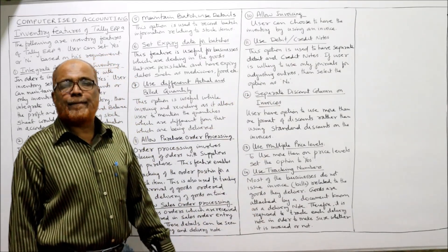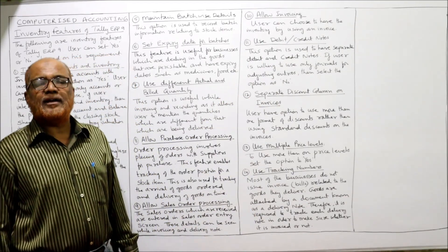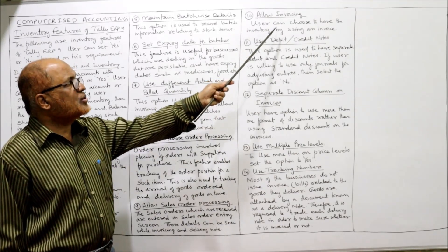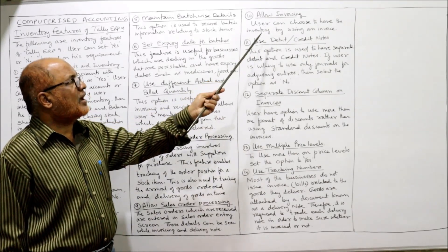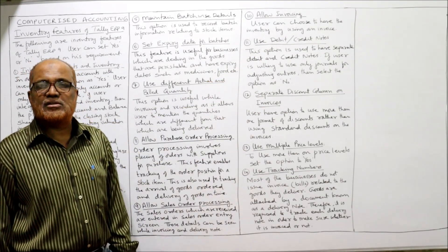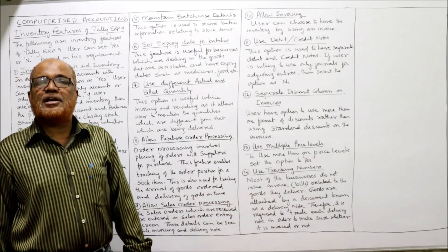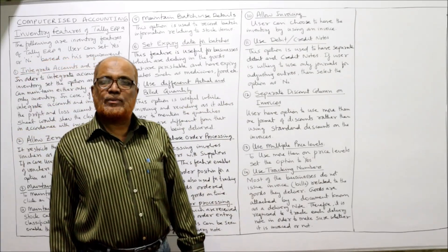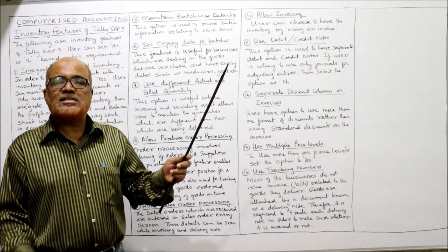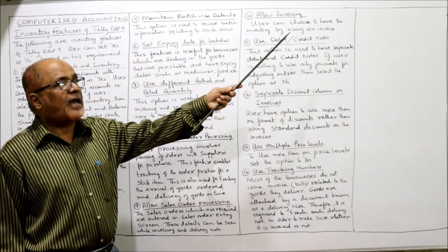The tenth feature is: allow invoicing. Tally ERP 9 will allow invoicing — the user can choose to maintain inventory by using an invoice. The eleventh feature is: use debit and credit notes. This accounting package has the feature of separate debit and credit notes.